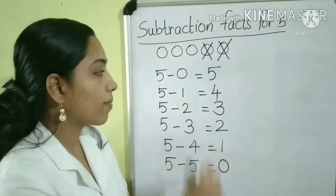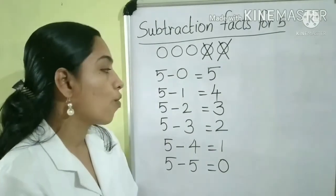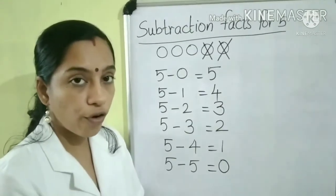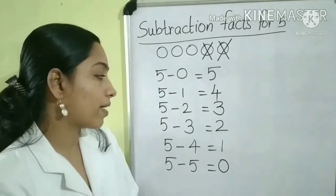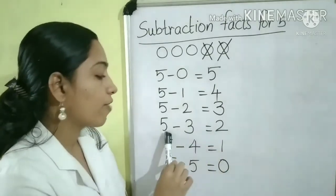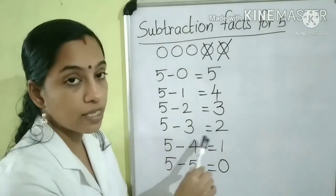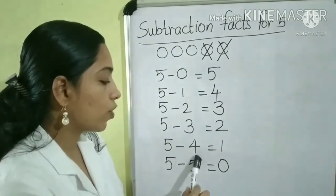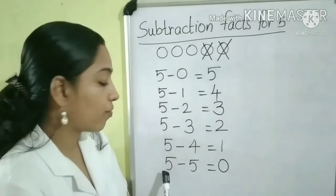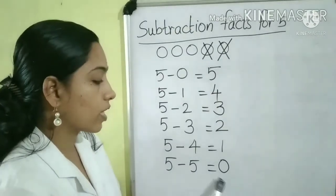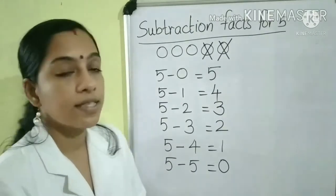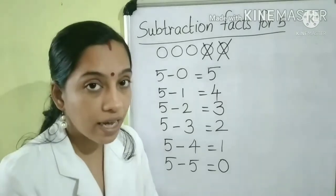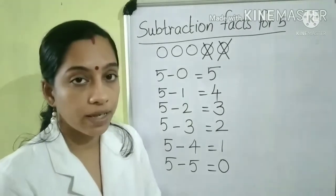The subtraction facts for number 5 are: 5 minus 0 is equal to 5; 5 minus 1 is equal to 4; 5 minus 2 is equal to 3; 5 minus 3 is equal to 2; 5 minus 4 is equal to 1; and 5 minus 5 is equal to 0. Is it clear?